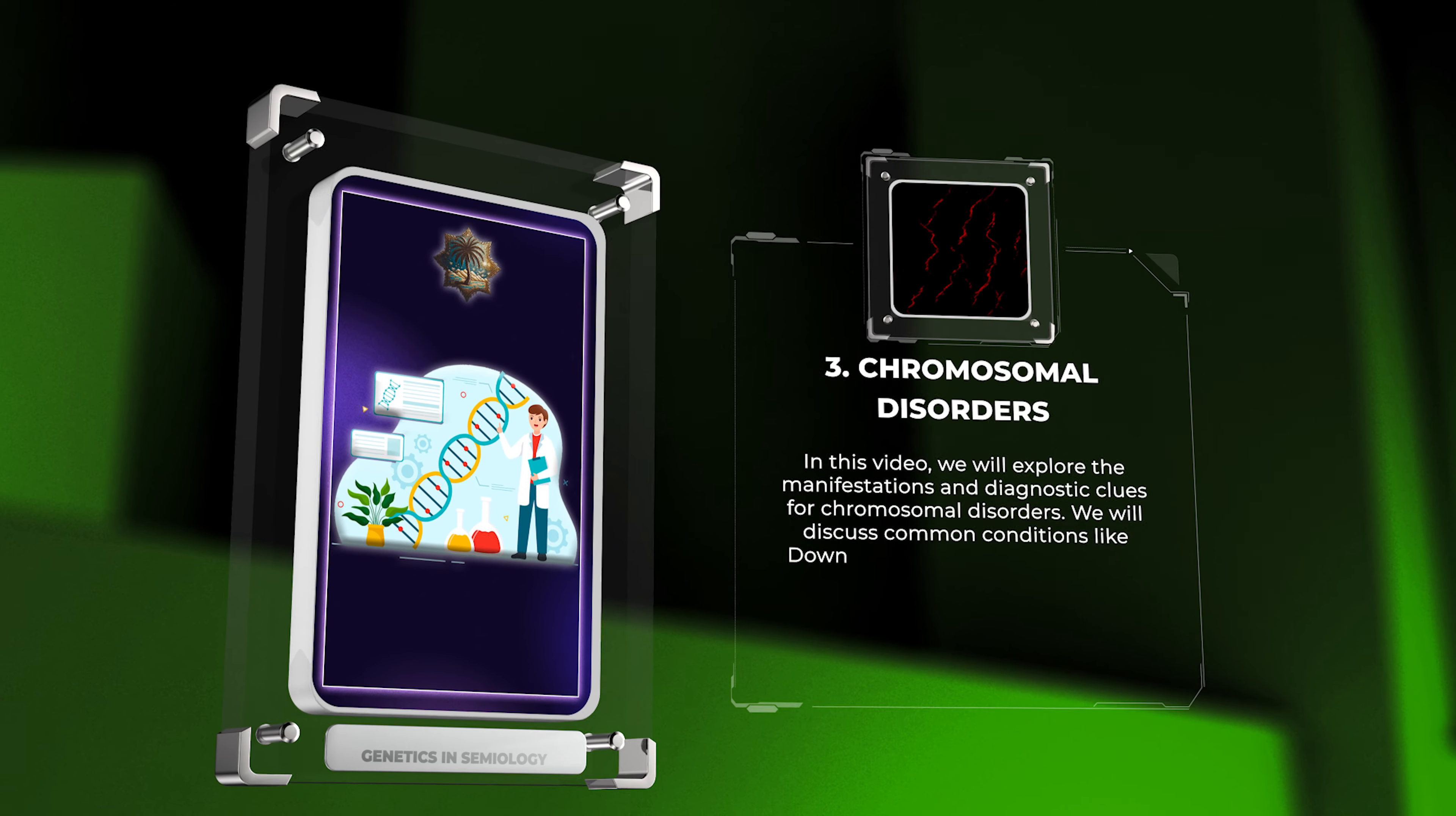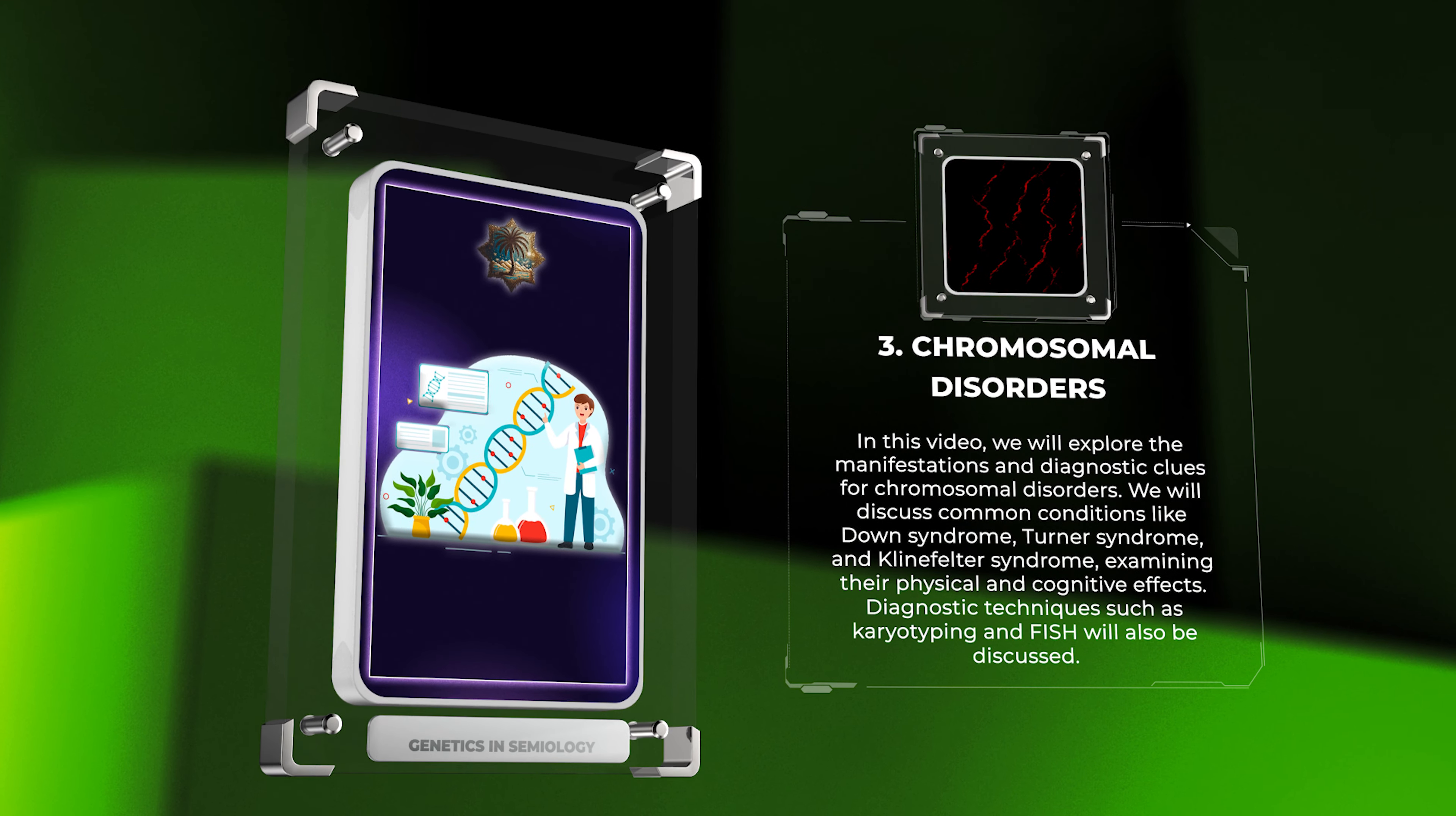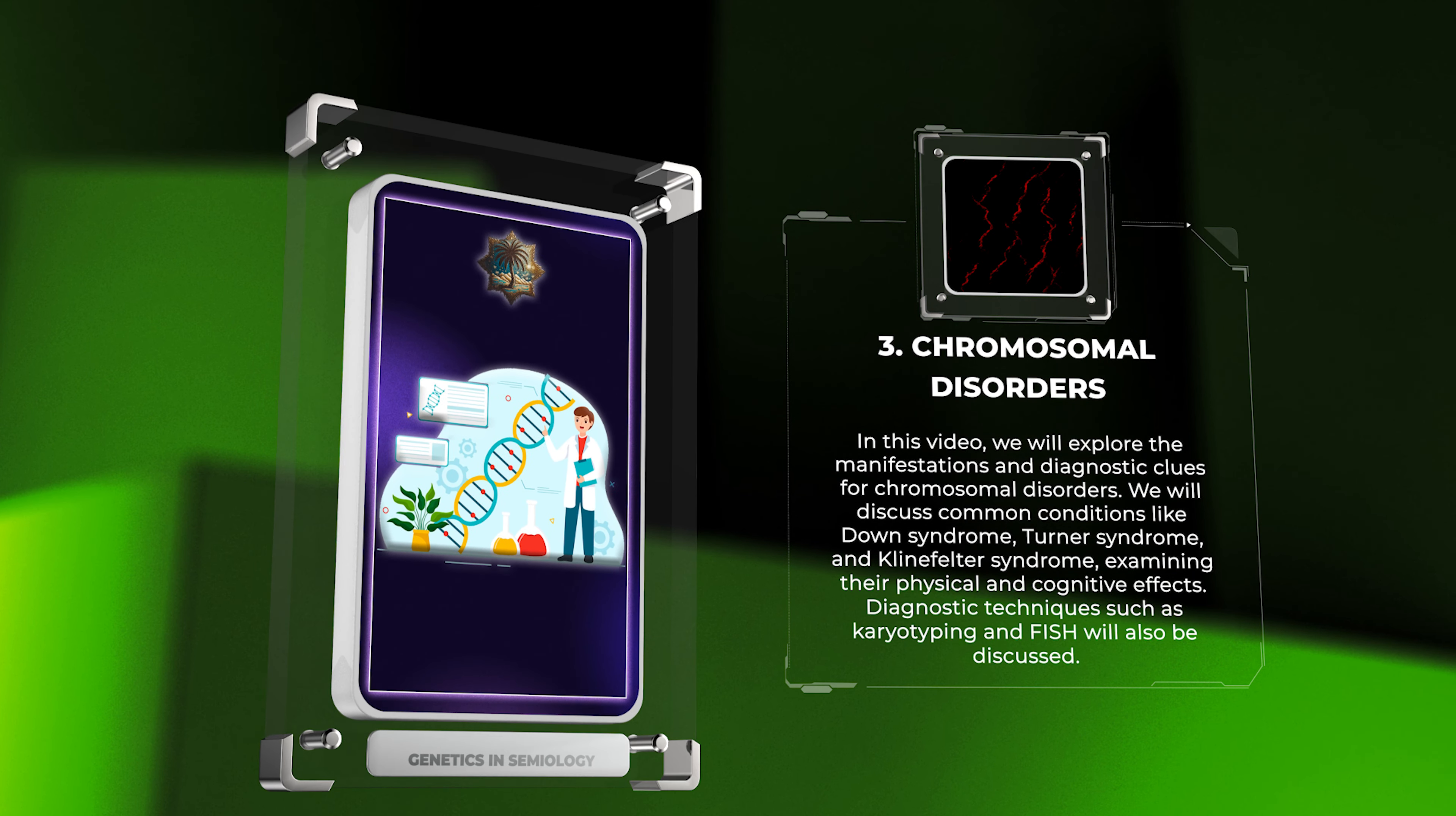In this video, we will explore the manifestations and diagnostic clues for chromosomal disorders. We will discuss common conditions like Down syndrome, Turner syndrome, and Klinefelter syndrome, examining their physical and cognitive effects. Diagnostic techniques such as karyotyping and FISH will also be discussed.